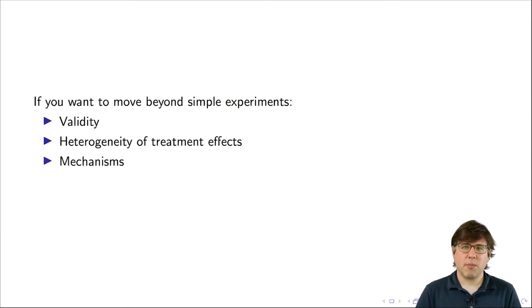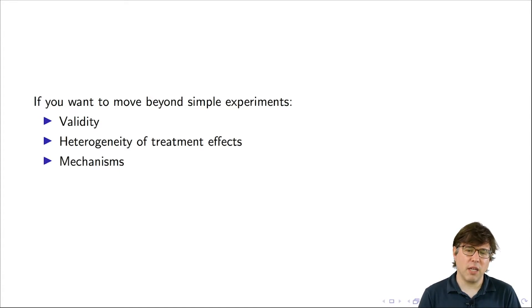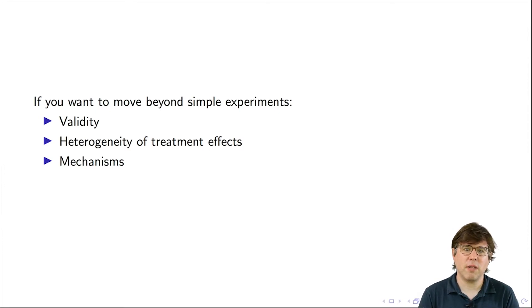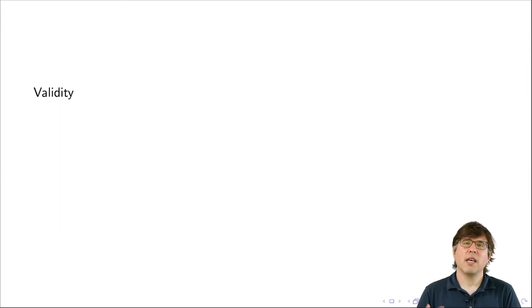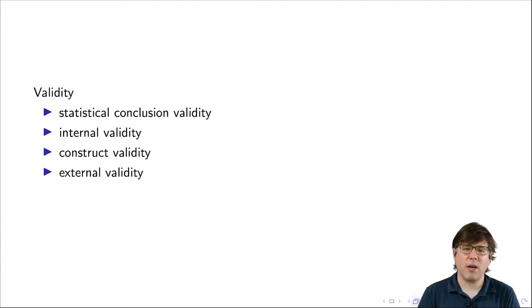If you want to move beyond simple experiments in the way Schultz et al. did, social scientists have developed many helpful ideas. I think three are most important: validity, heterogeneity of treatment effects, and mechanisms. Validity is a checklist of ways that experiments can go wrong — similar to the total survey error framework I discussed in an earlier video, which provides a framework for thinking about all sources of error in surveys. Validity helps you think about all the different ways your experiment can go wrong. There are four main ways.